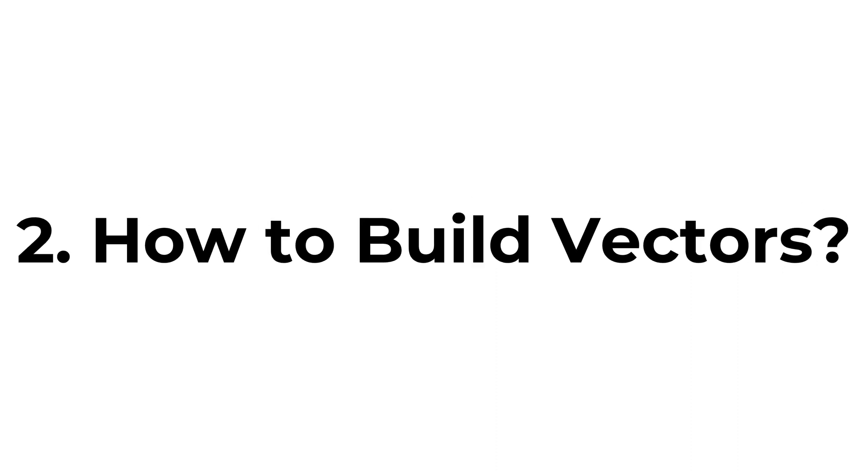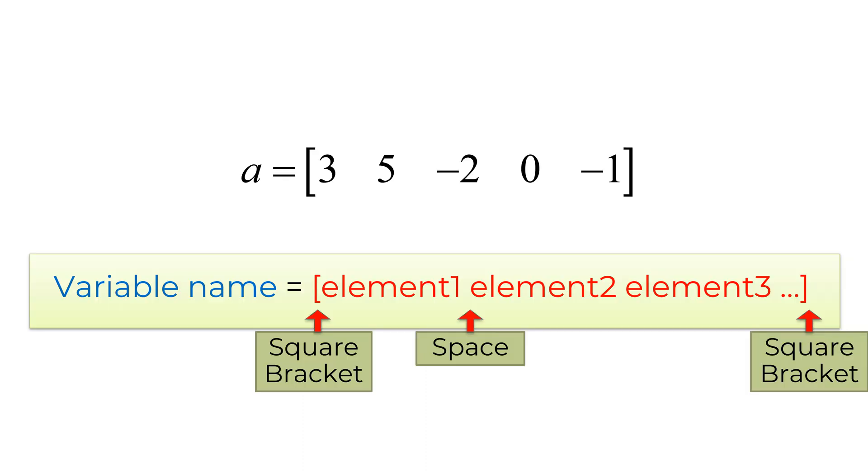There are a few different ways to build the vectors in MATLAB and you can choose whichever works best for you. I will show you how to build the following 1 by 5 row vector A. A simple way to build the row vector is to use square brackets. In command window, you can type A as a vector or variable name equals sign square brackets and type 3, 5, minus 2, 0, and minus 1 with a space in between. If successful, it shows only elements with a variable name without square brackets below.